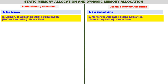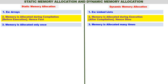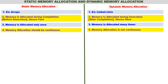In dynamic memory allocation, memory is allocated during execution. Since memory allocation takes a small amount of time at runtime, the program becomes a little slow. Also, in static memory allocation memory is allocated only once, whereas in dynamic memory allocation it is allocated many times. Static memory is continuous; dynamic memory is not continuous.